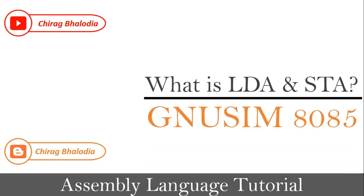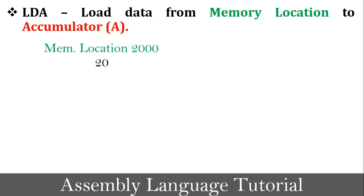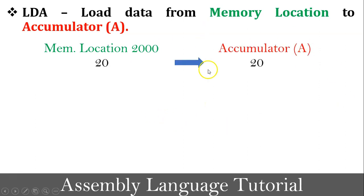What is LDA instruction? LDA means load data from memory location to the accumulator A. We all know that accumulator is a special register. For example, the value 20 is stored at memory location 2000. So if I want to copy or load that value into the accumulator from the memory location, I have to use the LDA instruction.